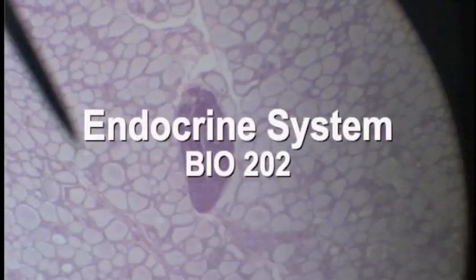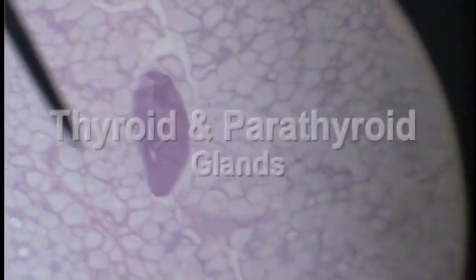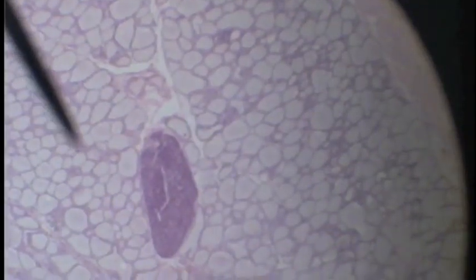This is a cut through both the thyroid gland and the parathyroid gland. Here we see the parathyroid gland, and the tissue surrounding it is thyroid. Parathyroid and the thyroid surrounding it.